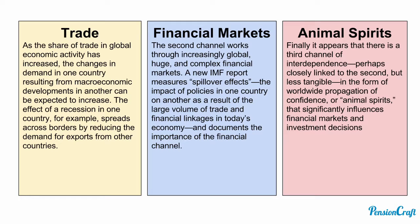Secondly, financial markets are highly interlinked. Investment banks are global entities, and it's easy for a multinational to buy instruments in any country. That means that financial markets are highly interlinked, and if there's a problem in one country it spills over into others. The subprime mortgage crisis in the US is one example of that, and the Greek sovereign debt crisis is another.